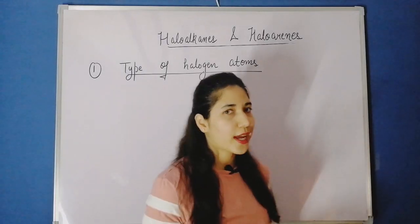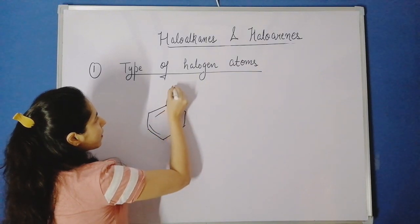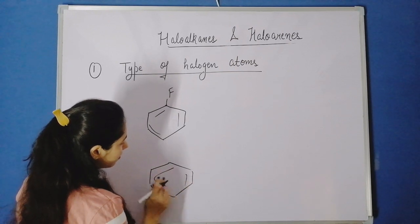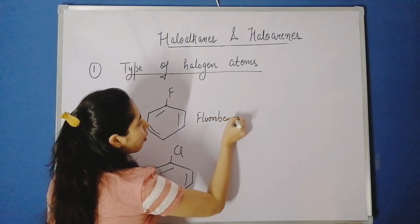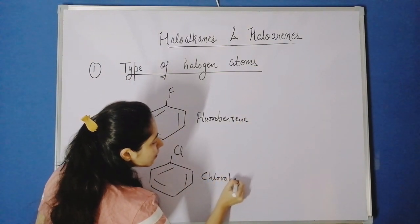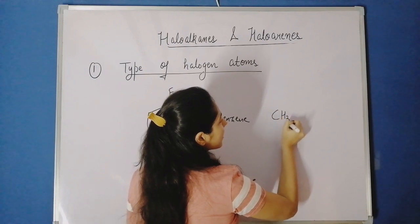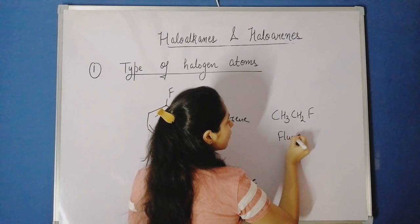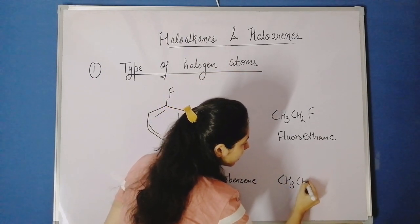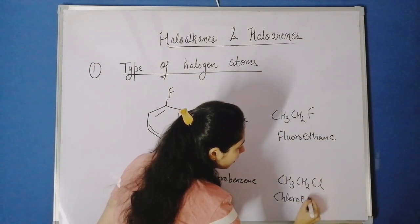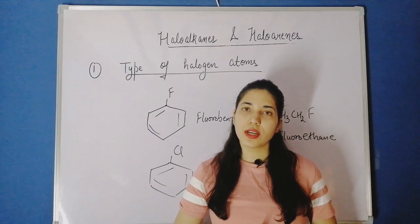For the first classification based on the type of halogen atom: if we have a benzene ring with fluorine attached, that compound is fluorobenzene; with chlorine attached, it is chlorobenzene. Similarly for aliphatic compounds, CH3CH2F is fluoroethane and CH3CH2Cl is chloroethane. This shows the difference based on the type of halogen atom present.